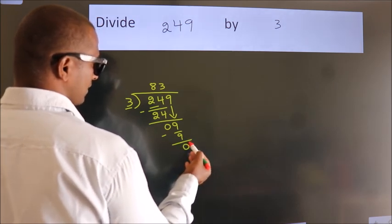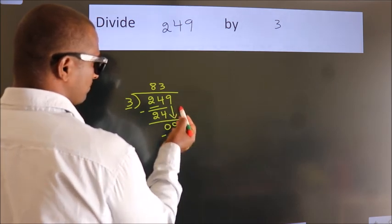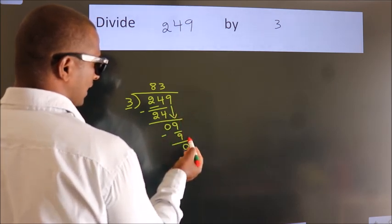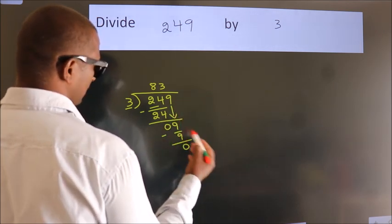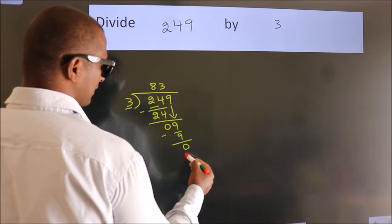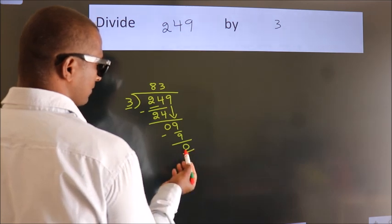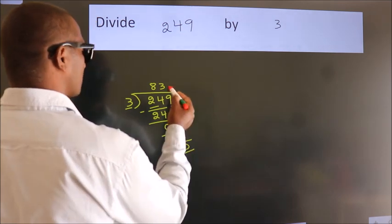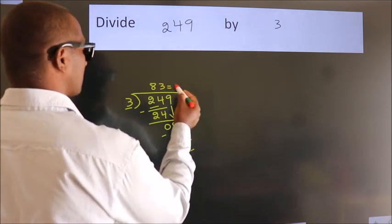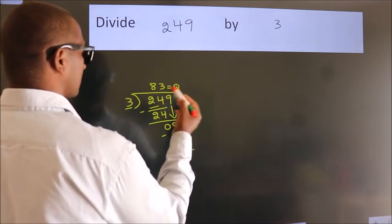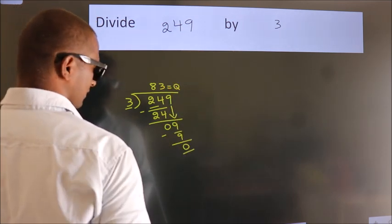After this, no more numbers to bring down, and we got remainder 0. So this is our quotient.